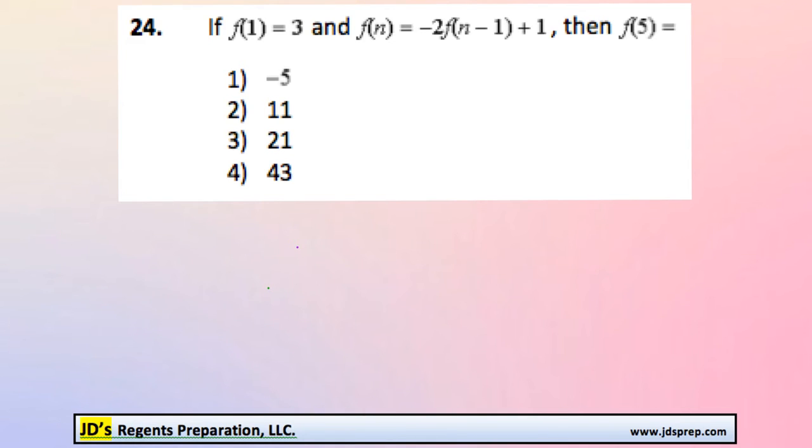This is problem number 24 from the August 2014 Algebra Regents exam. We've got a value of f(1) equal to 3, and f(n) is equal to -2 times f(n-1) plus 1. What we need to figure out is what f(5) is equal to.